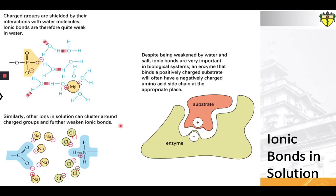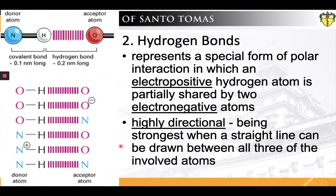Let's now look at how water molecules affect the strength and stability of ionic bonds. Because of a favorable interaction between water molecules and ions, ionic bonds are greatly weakened by water. Thus, many salts, including sodium chloride, are highly soluble in water, dissociating into individual ions such as sodium cation and chloride anion, each surrounded by a group of water molecules. This contrasts with covalent bonds, whose strength is not affected by water.